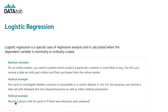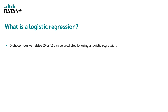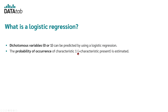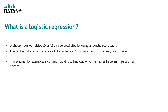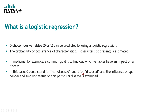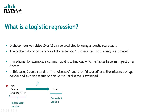What is logistic regression? In its basic form, logistic regression predicts dichotomous variables — variables with characteristics 0 and 1 or yes or no — by estimating the probability of occurrence of characteristic 1. In medicine, for example, the goal might be to find out which variables have an impact on a disease, where 0 is not deceased and 1 is deceased, and the influence of age, gender, and smoking status is examined. Graphically, we use independent variables like age, gender, and smoking status to predict whether a person is likely to get a certain disease or not.